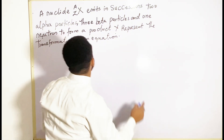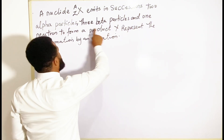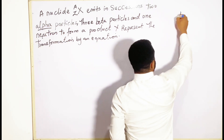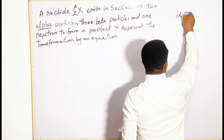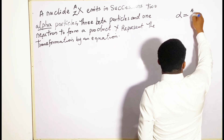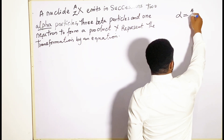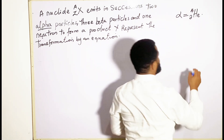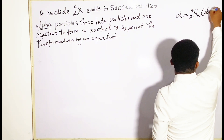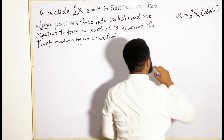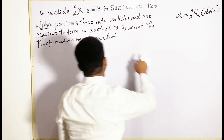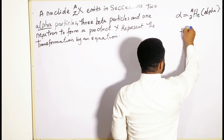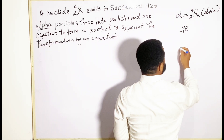Looking at this, we have two alpha particles. Whenever we talk about an alpha particle, the atomic mass is 4 and the atomic number is 2 — it is helium, ⁴₂He.